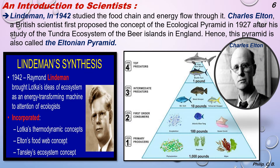Introduction to scientists: Lindman in 1942 studied the food chain and energy flow through it. Charles Elton, a British scientist, first proposed the concept of the ecological pyramid in 1927 after his study of the tundra ecosystem of Bear Island in England. Hence, this pyramid is also called the Eltonian pyramid.